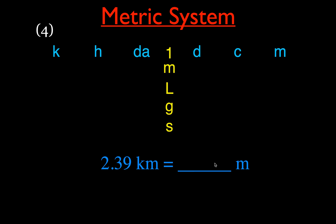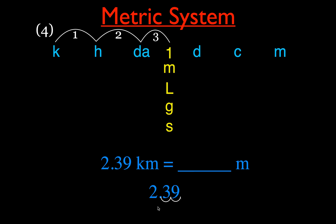Example 4: convert kilometers to meters. Kilo is three steps to the left of the base unit, so we move three steps to the right. Moving the decimal three places to the right on 2.39 km, we run out of digits and fill the empty space with a zero. 2.39 kilometers becomes 2390 meters.